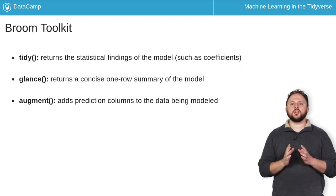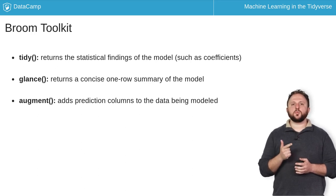The core of Broom is encapsulated by three functions which aim to extract conceptually different information from any model. Tidy is used to extract the statistical findings of a model. Glance provides a one-row summary of a model. And augment appends the predicted values of a model to the data being modeled.